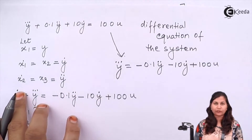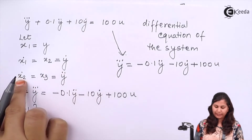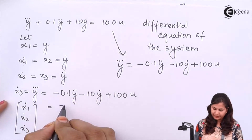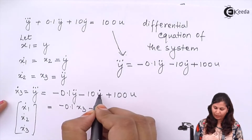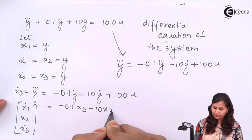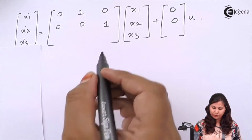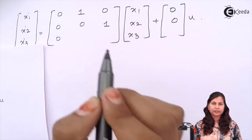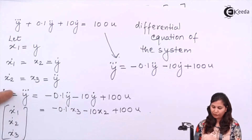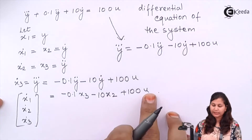For ẋ3, we have −0.1 times ÿ, which is x3, so −0.1x3; minus 10 times ẏ, which is x2, so −10x2; plus 100u. Therefore the coefficients are [0, −10, −0.1] with u coefficient 100.